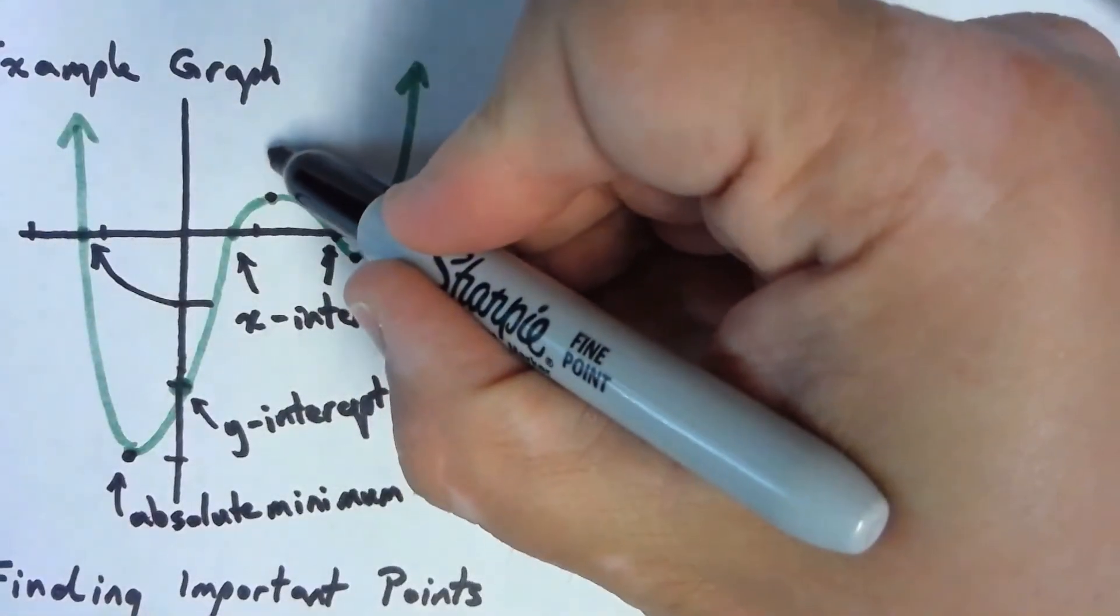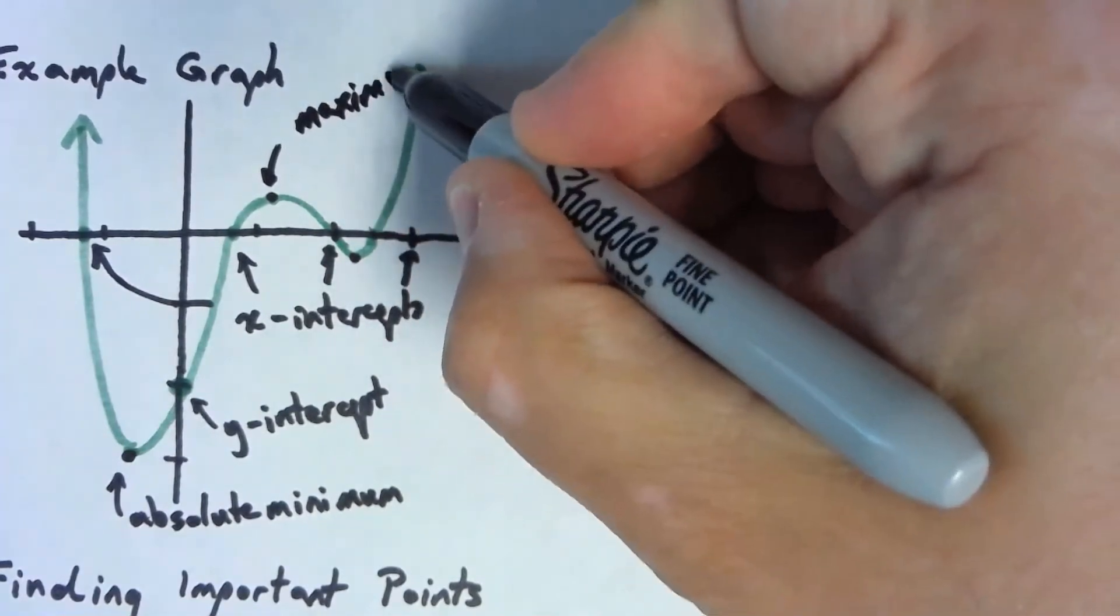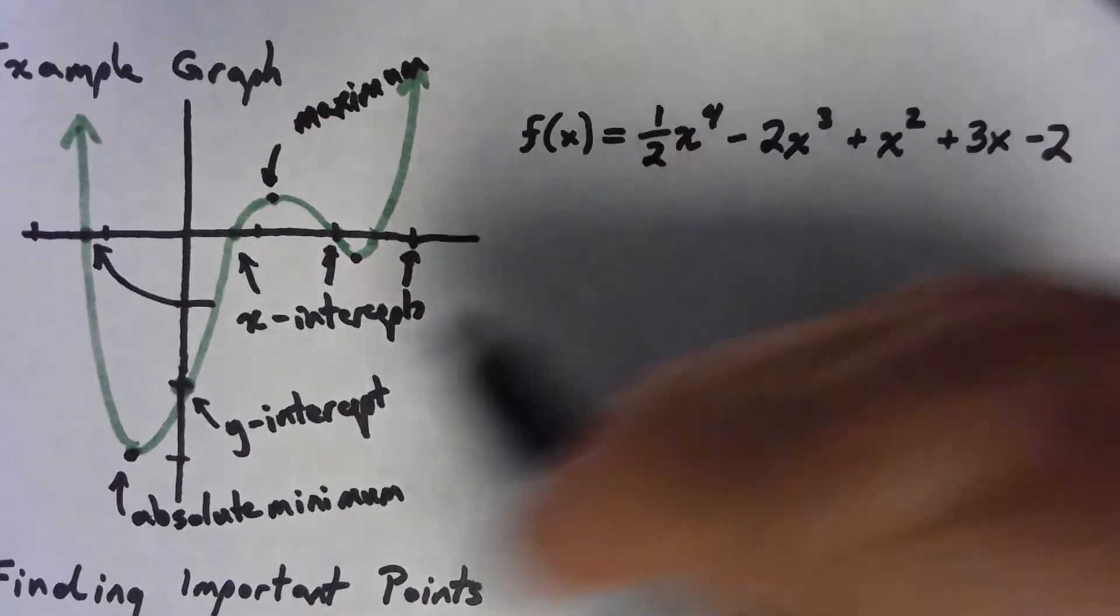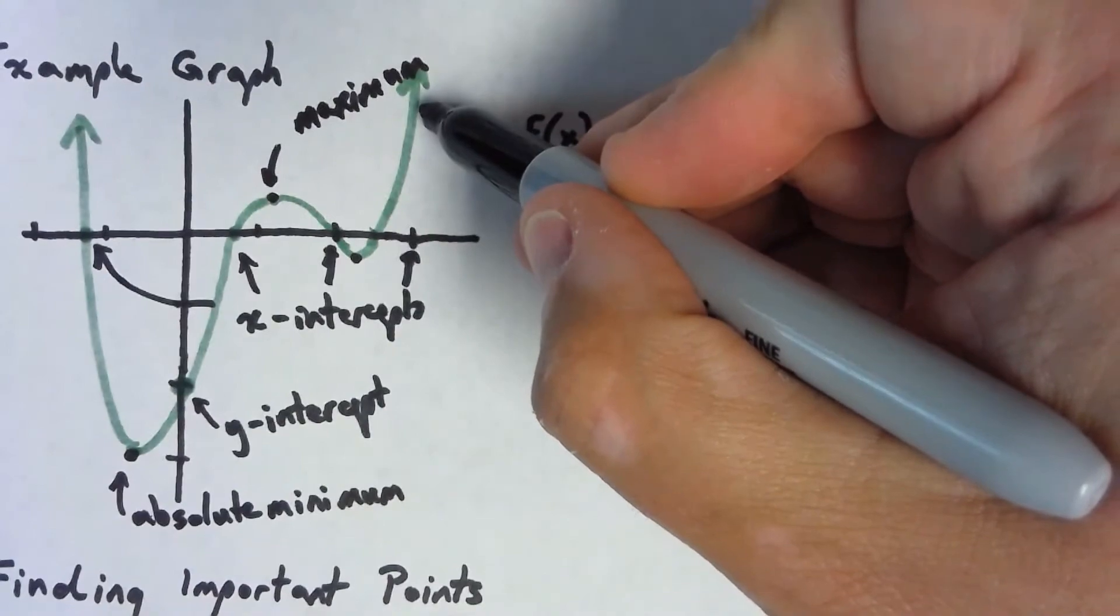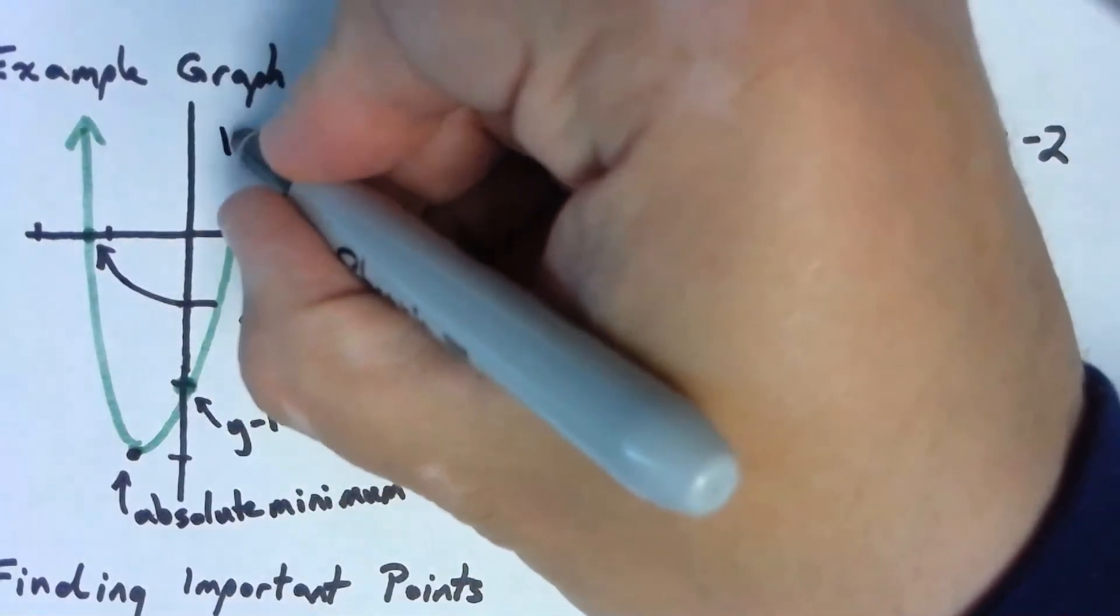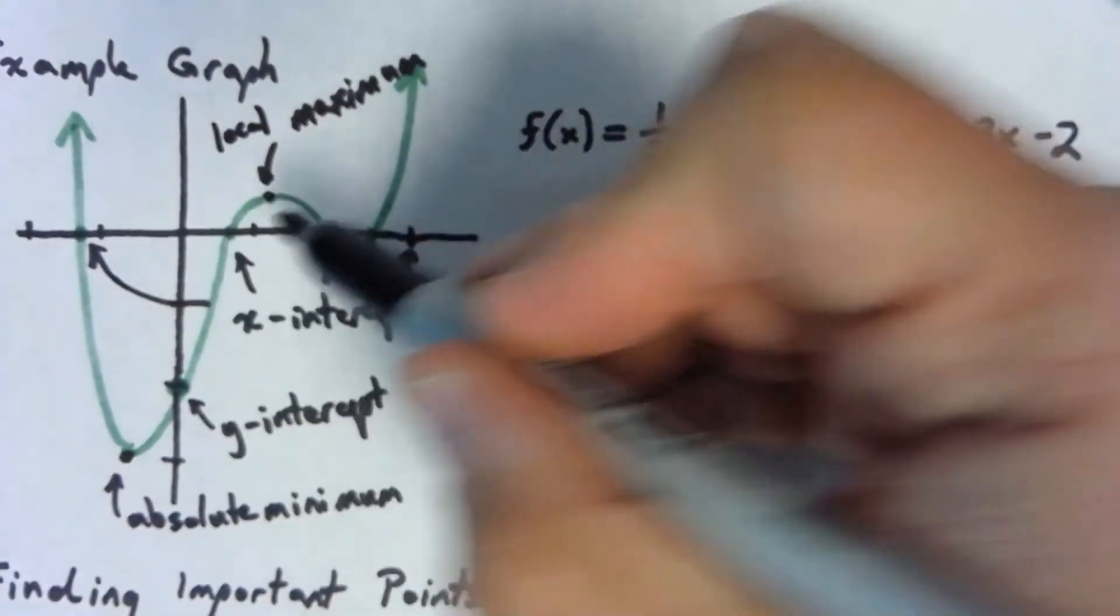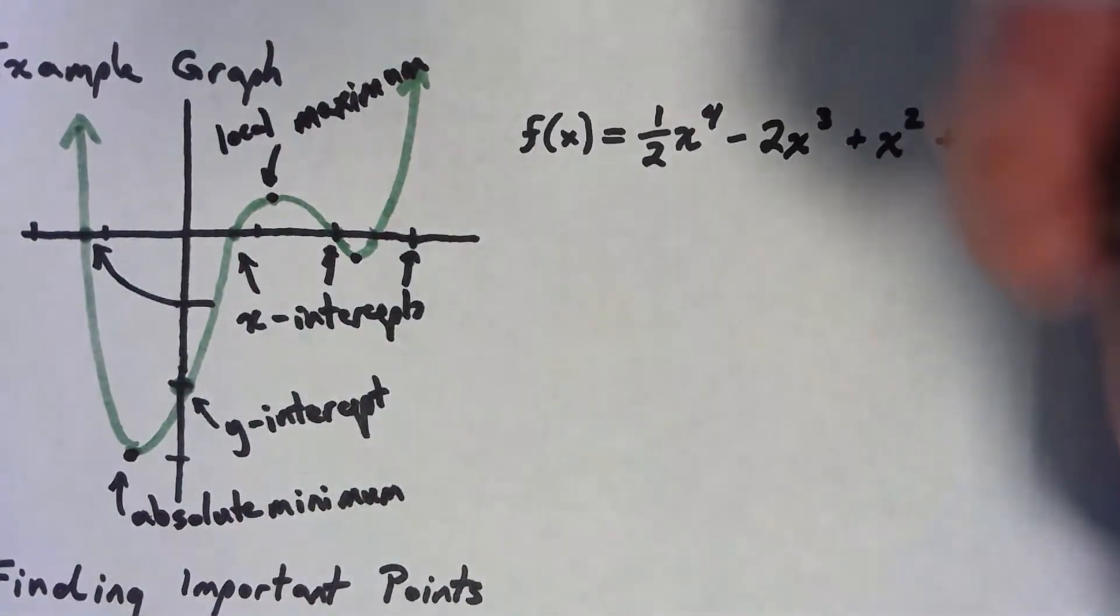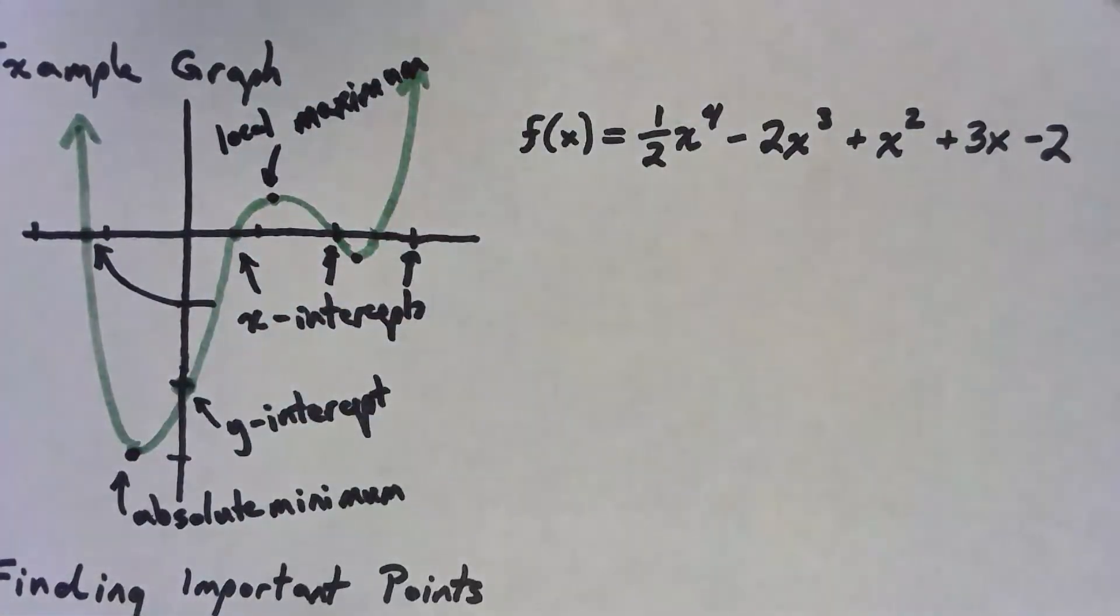Now this point here, it is a maximum, but it's not an absolute maximum because while it's the highest point, if I look over here, the graph actually gets higher than what that point is. So we're going to call that a local maximum. Nearby, it's the highest point the graph gets to, but it's not the highest point overall, whereas this one down here is the lowest point overall. The graph never gets any lower than that.